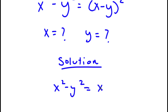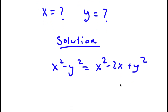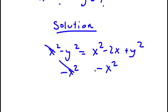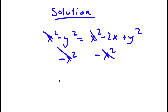x minus y squared is equal to x squared minus 2xy plus y squared. Now I'm going to subtract x squared on both sides to cancel out the x squared and make this problem easier to solve. These two cancel out and I'm left with negative y squared is equal to negative 2xy plus y squared.